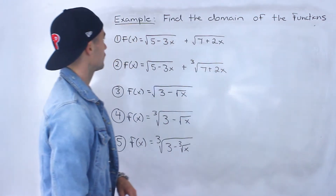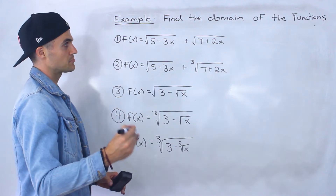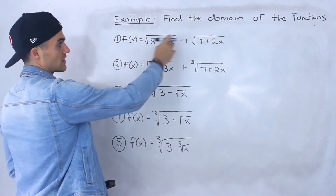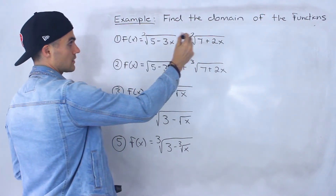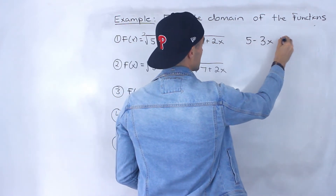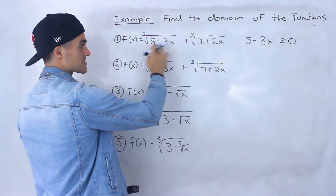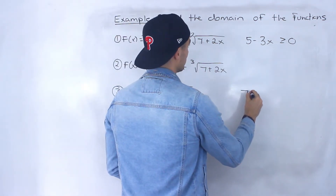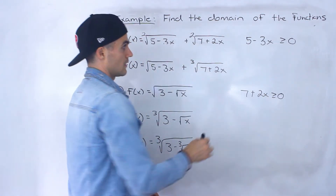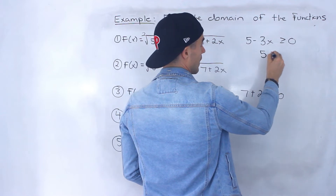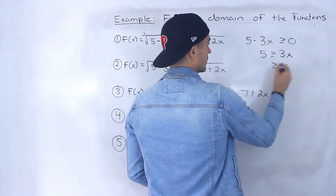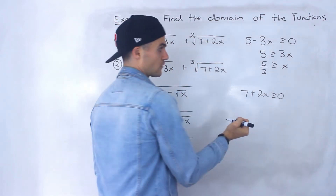For the first function we have the square root of five minus three x plus the square root of seven plus two x. These are even roots because there's a two under each radical. So we have to make sure that five minus three x is greater than or equal to zero, and that seven plus two x is greater than or equal to zero. Isolating for x in the first inequality: five has to be greater than or equal to three x, so x has to be less than or equal to five over three.